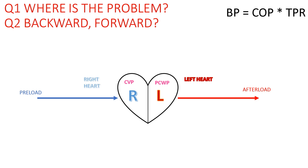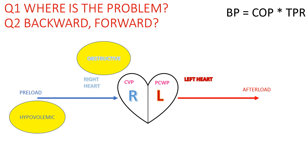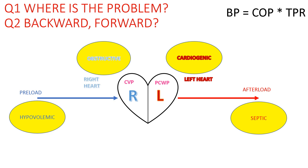The problem could be in the preload — the volume filling into the heart — and that would be hypovolemic shock. The problem could be that the right heart cannot deliver blood to the left side — that is obstructive shock. It could be a problem with the left heart not able to pump blood out to the rest of the body — that is cardiogenic shock. Or the resistance in the vessels is very low, blood is pooling, and cannot return to the heart — that is septic shock, or distributive shock. I'll use septic shock as an example of distributive shock. You can see that all these types of shock alter cardiac output or total peripheral resistance.